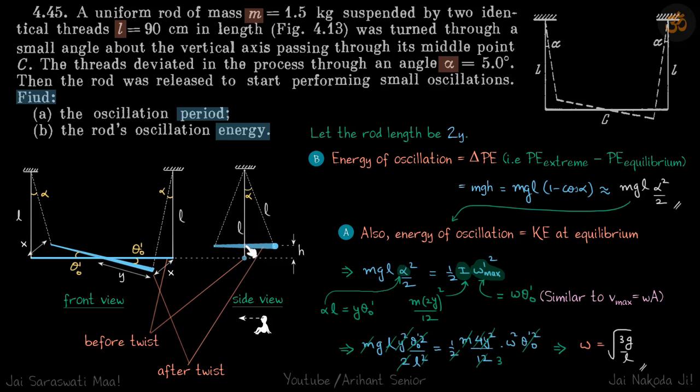When it is twisted it will go to a little bit above the bottom point and the rod will look like this. It's a 3D figure. Let's say the center of mass of the body goes up by a height h. These two are before twist.